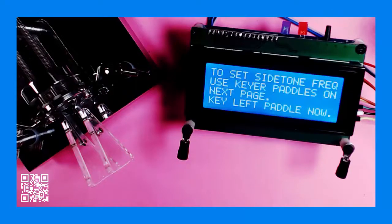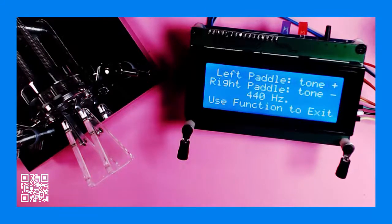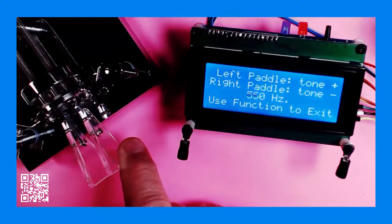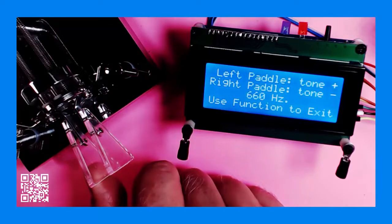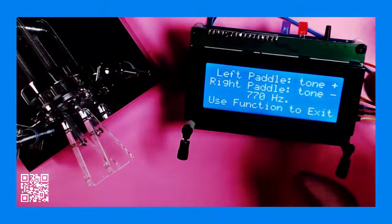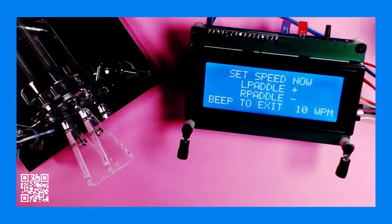The first time you launch your Mr. X keyer, this is the screen you're going to see. So simply touch the left paddle and now we have an opportunity to set the frequency for our sidetone. You can move the frequency up or down. Let's take it up. When you get it where you want it, just simply press your function key once. Now we'll do the same thing with setting the speed. So let's speed this up a little bit. We'll use the left paddle to increase the speed.